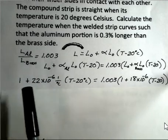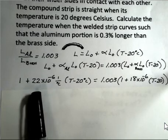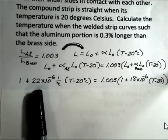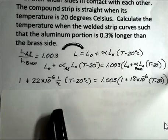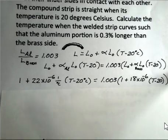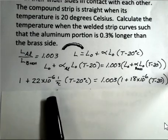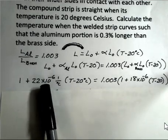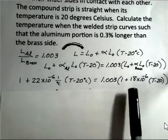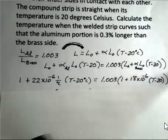The 1 here, the coefficient of expansion for aluminum, then T minus 20. And what do you notice is not in this line? L0 has been canceled. So there's an L0 in every term. Here, here, and then here, and here. So I can divide through by L0. We don't need to know what the original length was. We just want a percent change, 0.3% longer.